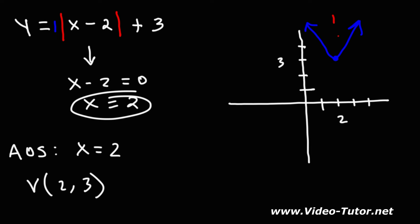And the axis of symmetry is this line, x equals 2. As you can see, the right side is a reflection of the left side at the axis of symmetry. And the vertex is this point, 2, 3. So that's how you can see it graphically.